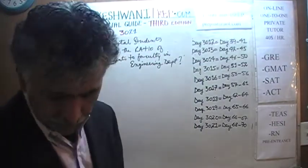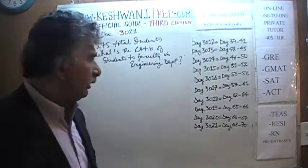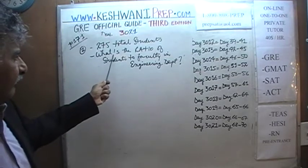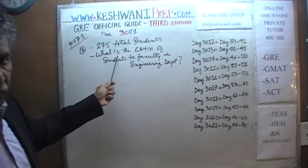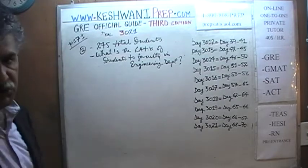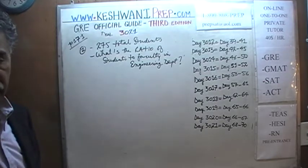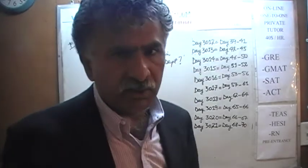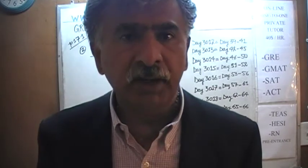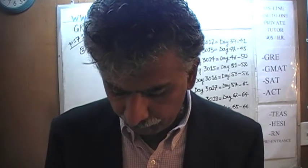Problem number one. We are told that we have 275 total students. The question is: what is the ratio of students to faculty in the engineering department? The engineering department is the fourth one from the top — that is the only department we are interested in.